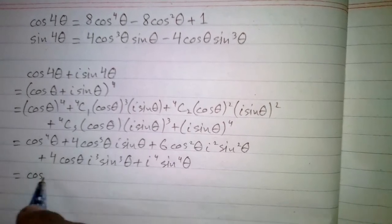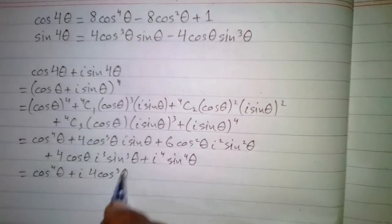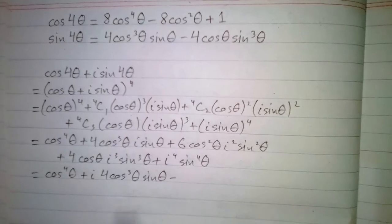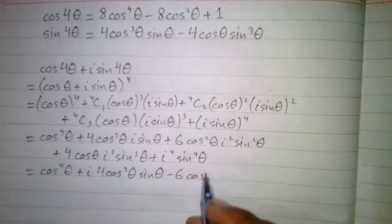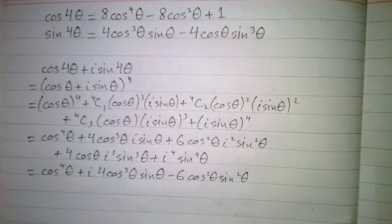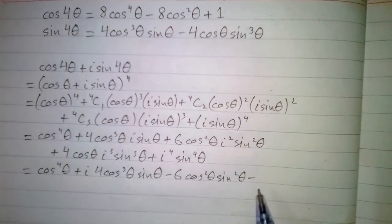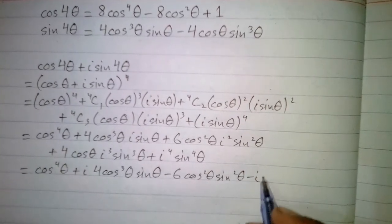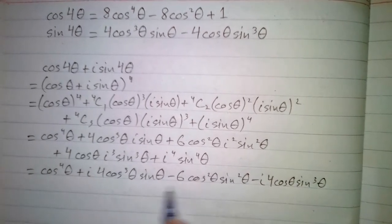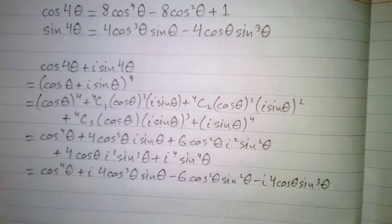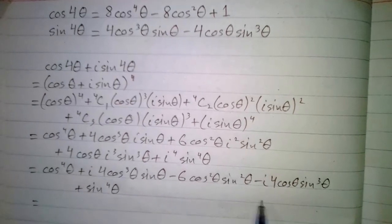This will be equal to cos⁴θ plus iota·4cos³θ·sinθ, then iota² is minus 1, so minus 1 multiplied by 6 gives minus 6cos²θ·sin²θ, then iota³ is minus iota so we have minus iota·4cosθ·sin³θ, and then iota⁴ is equal to 1, so we have plus sin⁴θ.